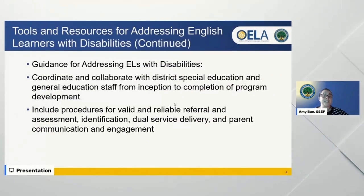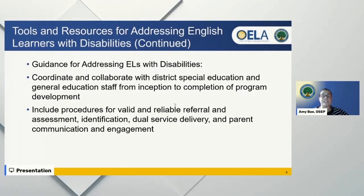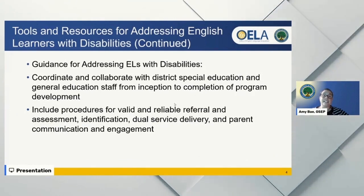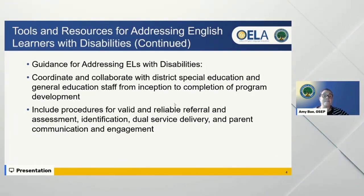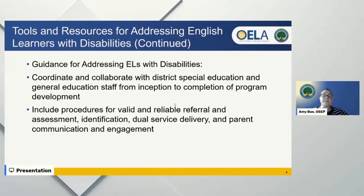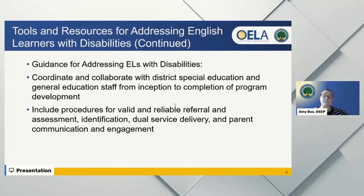Chapter 6 of the English Learner Toolkit provides users guidance for addressing the rights of students with disabilities in school and other educational settings. If an English learner is suspected of having one or more disabilities, the LEA must evaluate the English learner student promptly to determine if the student has a disability and whether they need disability-related services.